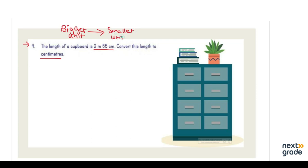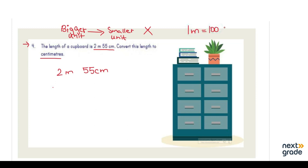When converting from bigger to smaller unit, we multiply. So we have 2 meters and 55 centimeters. To convert 2 meters, we multiply by 100 since there are 100 centimeters in one meter. So we write 2 multiplied by 100 plus 55 centimeters. Two multiplied by 100 is 200.